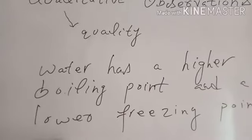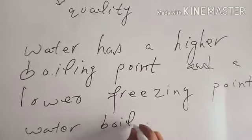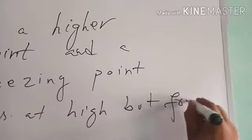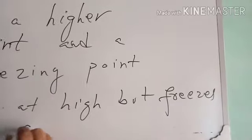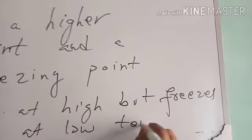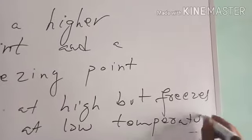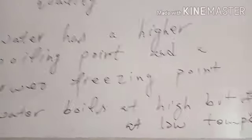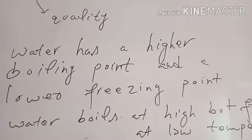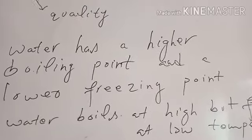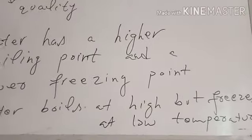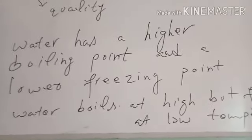Such type of observations which don't give a value, which are not described in numbers, and which just describe the qualities or characteristics of something are called qualitative observations. For example, we say that Aslam is taller than Akram.